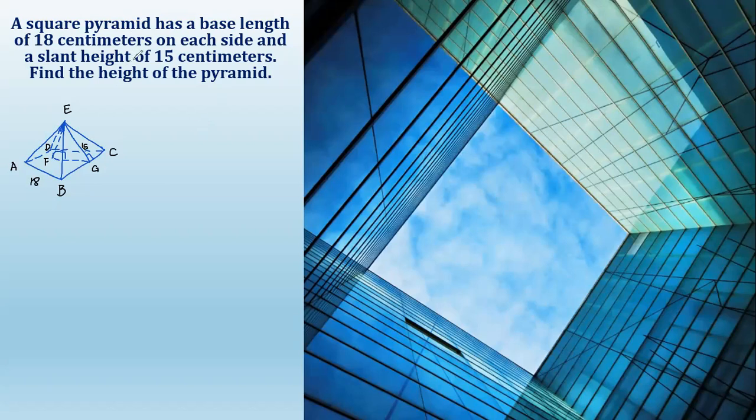So from the given information, I'll make a diagram of the square pyramid. AB here is the base length, which measures 18 centimeters. And EG is our slant height, which is 15 centimeters. And EF is the height. We need to find the exact measurement of the height, which is represented by EF.